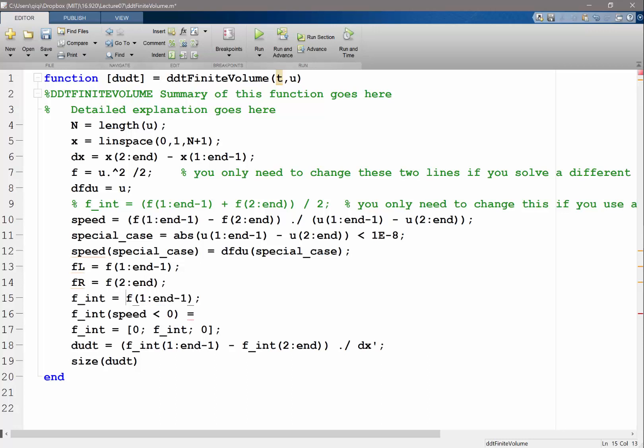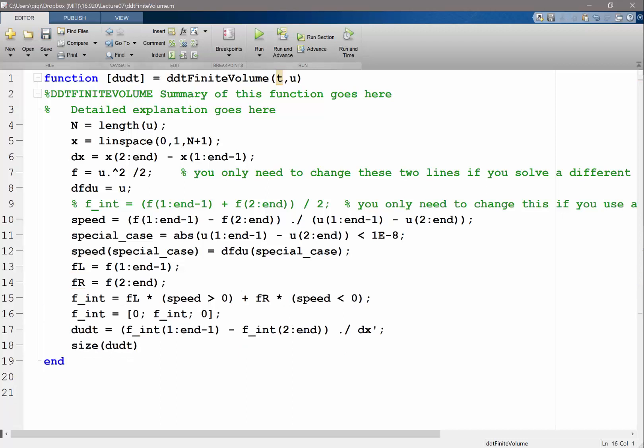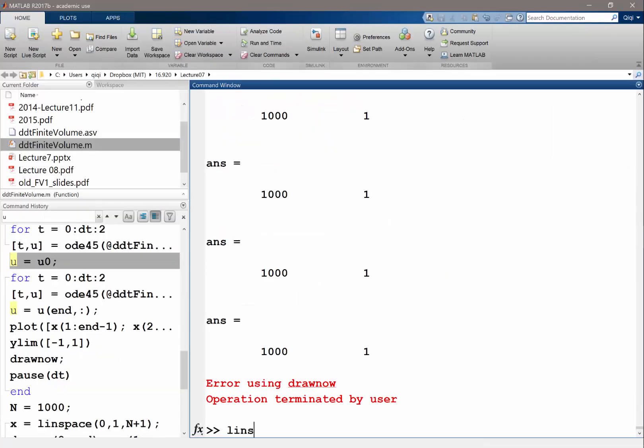let's set to be f_left times... can you do this in MATLAB? f_left times (speed > 0) plus f_right times (speed < 0)? Is that going to work? Do you have to make it int? Would that work?